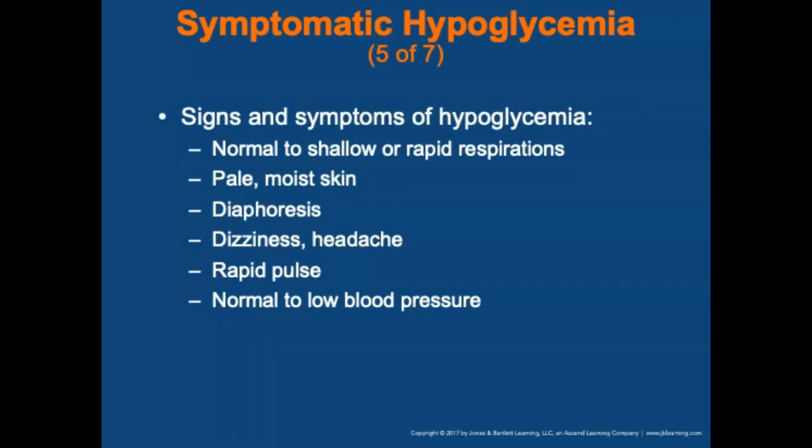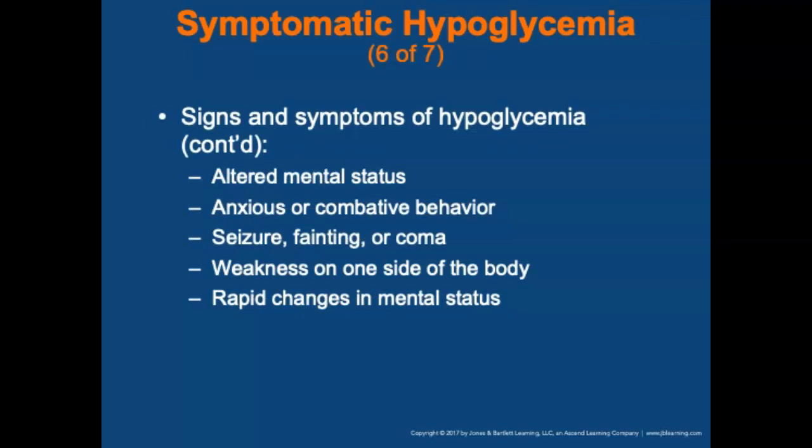Signs and symptoms differ between hypo and hyperglycemia. With hypoglycemia, you'll typically see normal to shallow or rapid respirations, pale moist skin, diaphoresis, dizziness, headache, rapid pulse, and normal to low blood sugar. You may also see altered mental status, anxiety or combative behavior, seizures, fainting, coma, weakness on one side of the body — which can mimic stroke symptoms — and rapid changes in mental status.